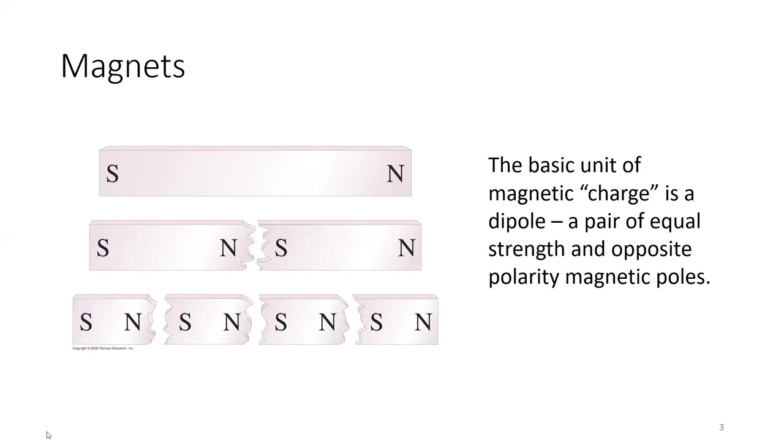The basic unit, the smallest unit that we can have of the equivalent to electric charge in a magnetic field, is this dipole. It's two poles. We don't have any evidence that there are lone magnetic monopoles, and if we did, we'd have to rewrite some of our electromagnetic equations to account for that.